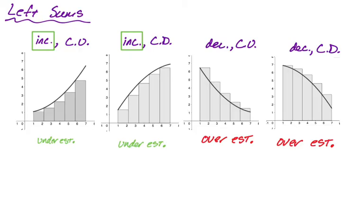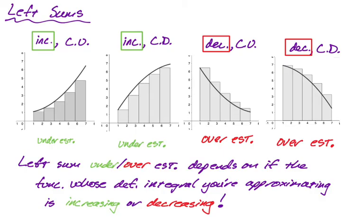When the function was increasing, we had underestimates. I'll also note that I used red and green, which is a terrible choice for the colorblind — I apologize to anyone who is red-green colorblind. But if a function is increasing, you will get an underestimate for your left sum. If a function is decreasing, you will get an overestimate for your left sum, and you can tell all of that from pictures. So a left sum will over or underestimate depending on if the function is increasing or decreasing — underestimates when increasing, overestimates when decreasing.